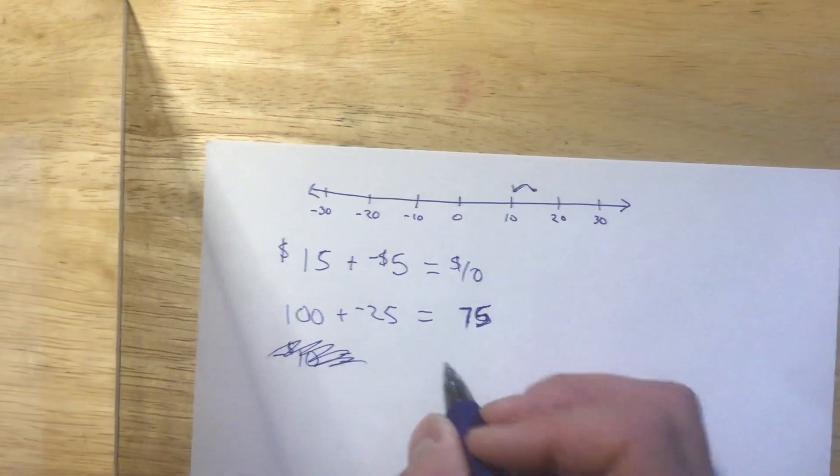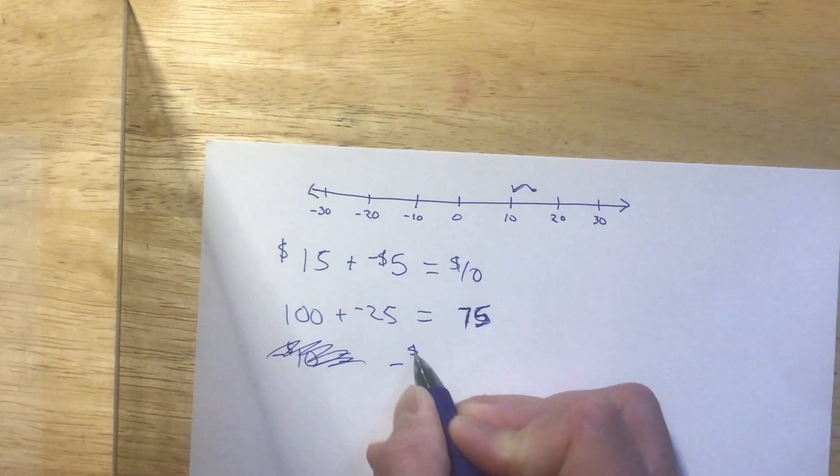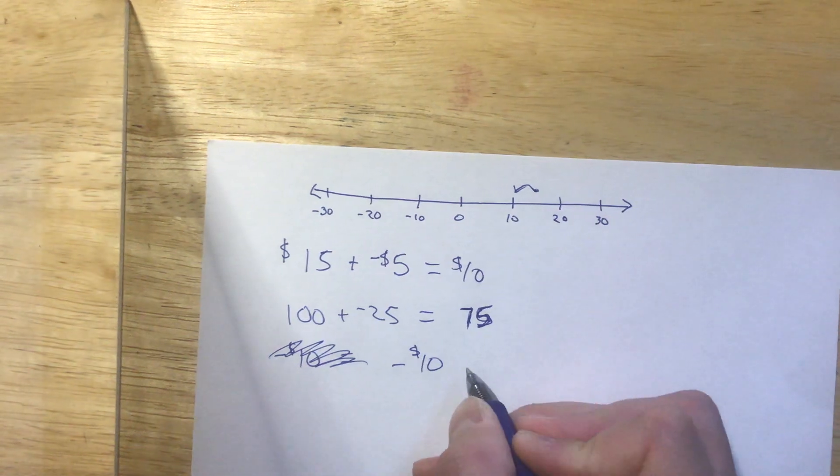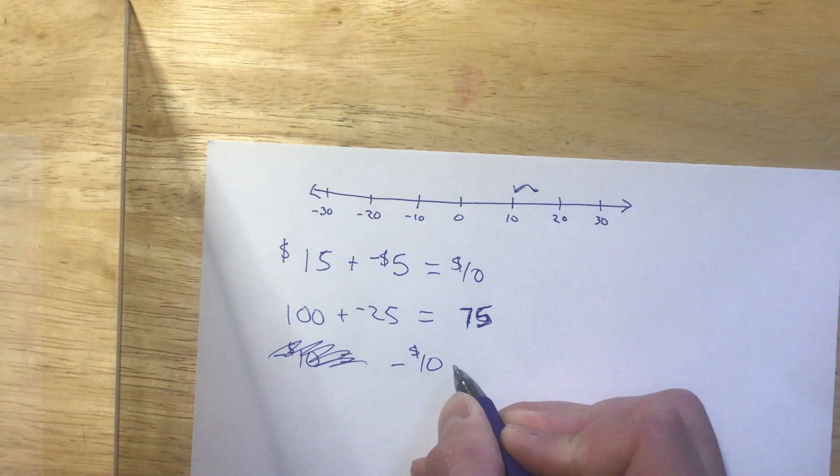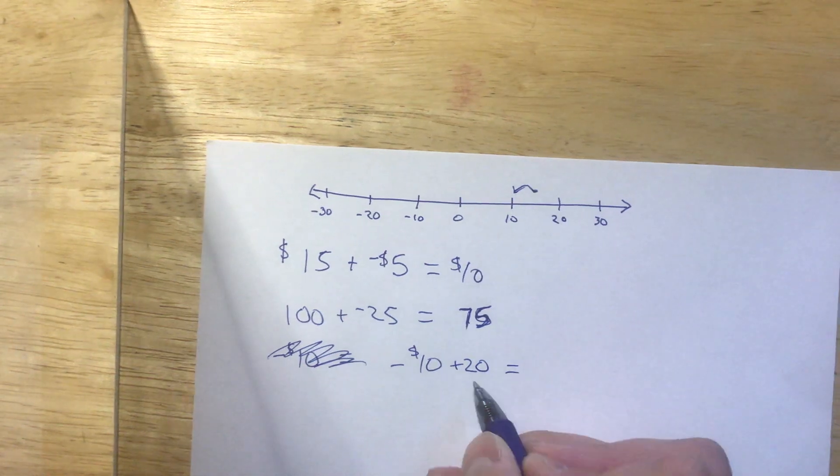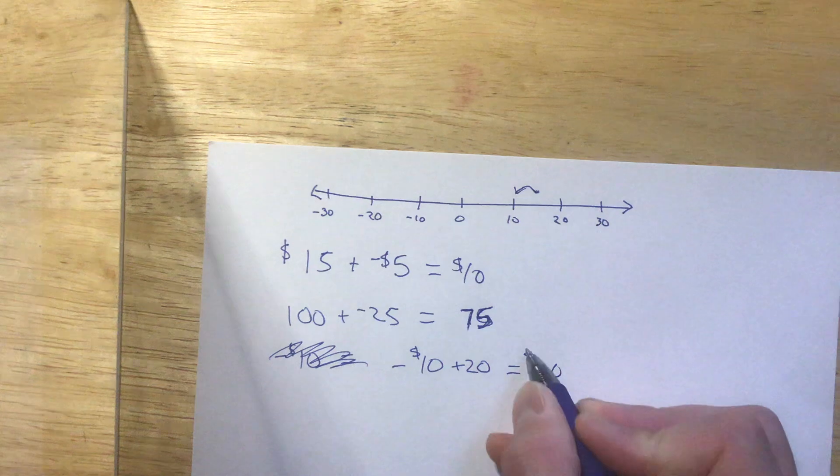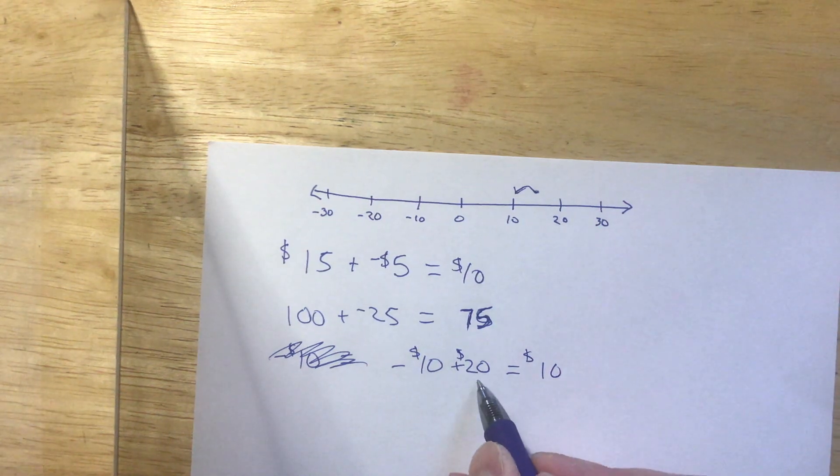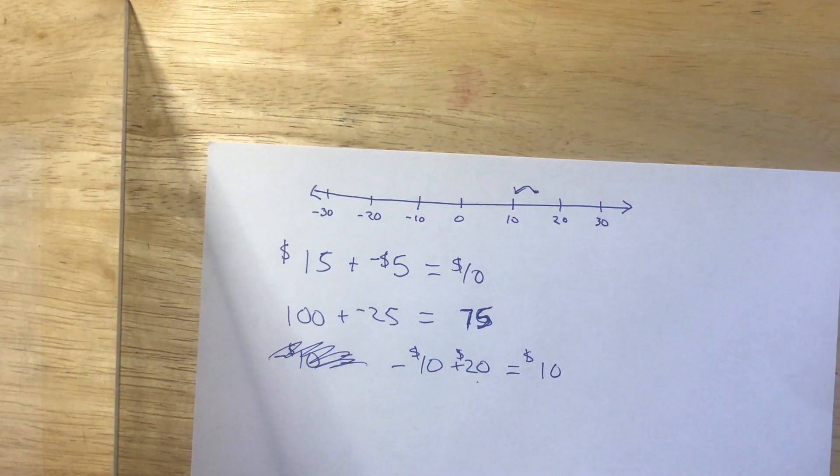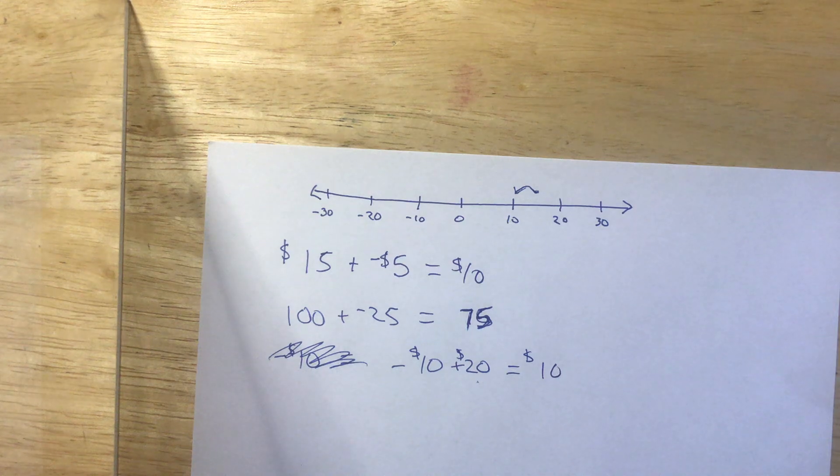I owe $10 to the Music of the Month Club, but I shovel snow this winter, and I make $20. Well, by the time I send the money into that club, I'm only left with $10, right? Because I had $20, but I had to pay off my debt, so I only have $10.